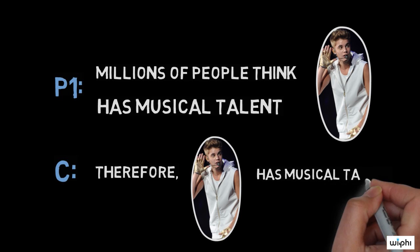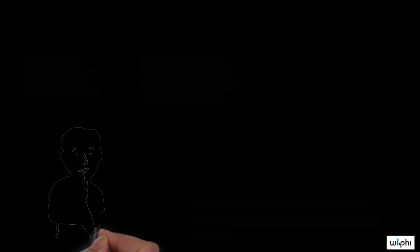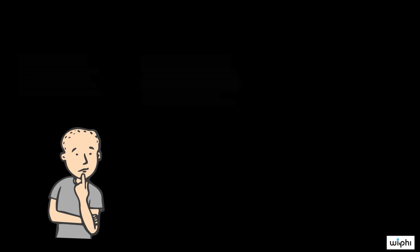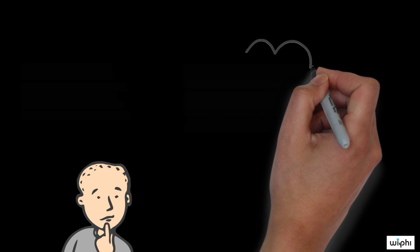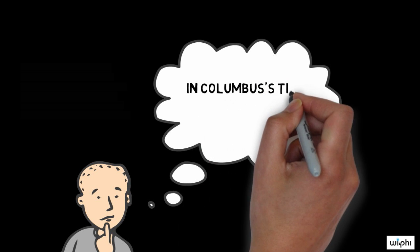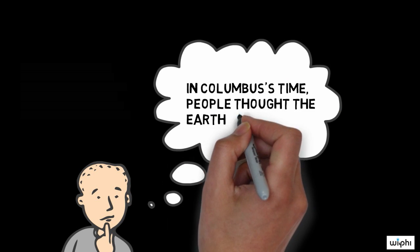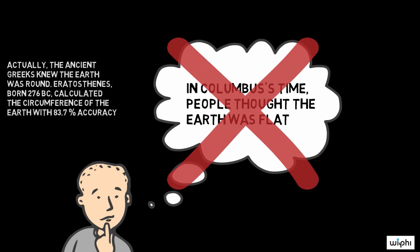Now, if you think there's something fishy about this argument, you're right. The big problem with this argument is that it tries to establish the truth of its conclusion, that is, that Justin Bieber has musical talent, by appealing to the fact that many people believe that conclusion to be true. But this simply doesn't follow. Something can be true, even if everyone believes it to be false. And something can be false, even if everyone believes it to be true.